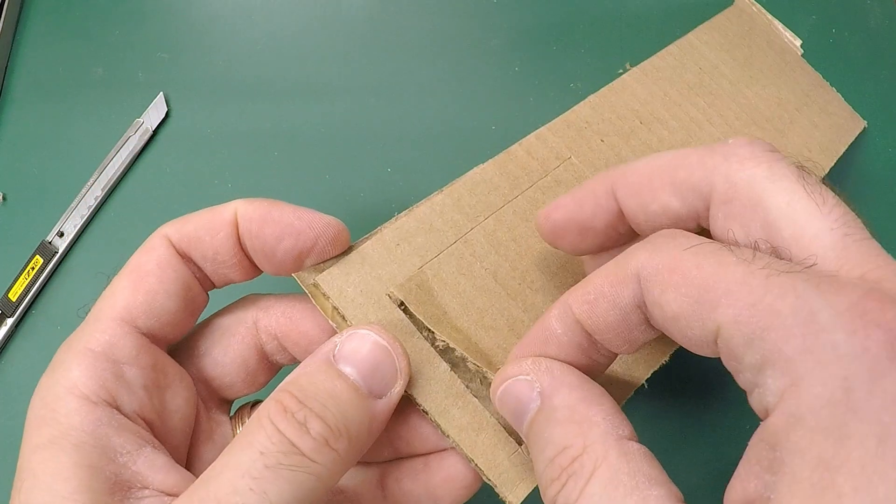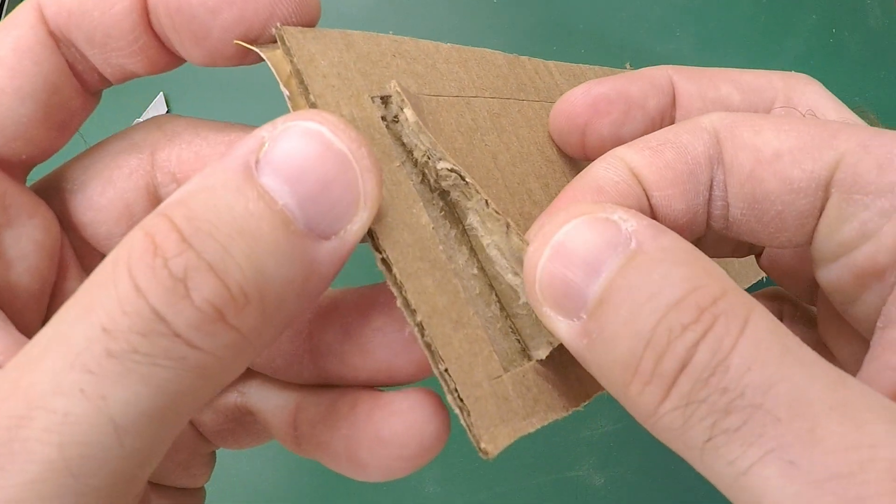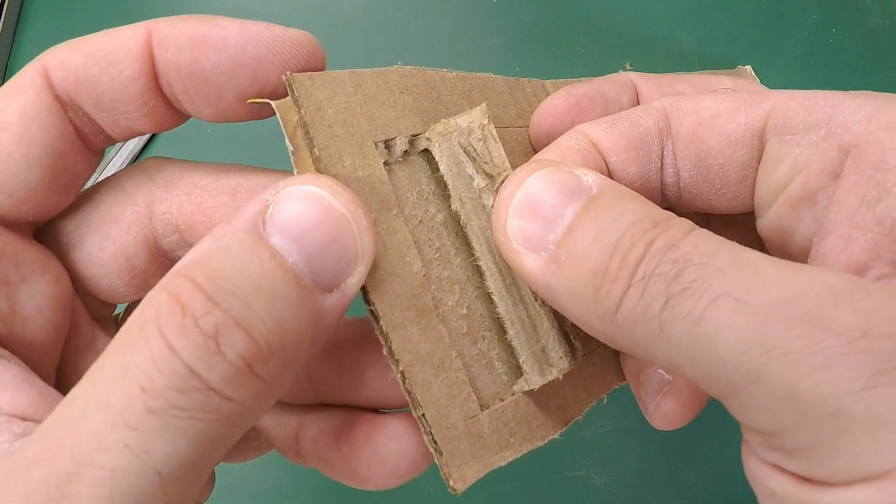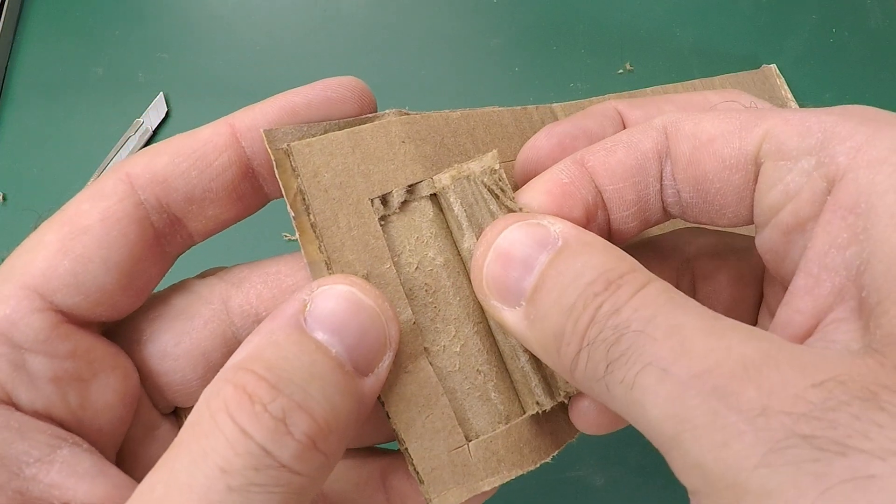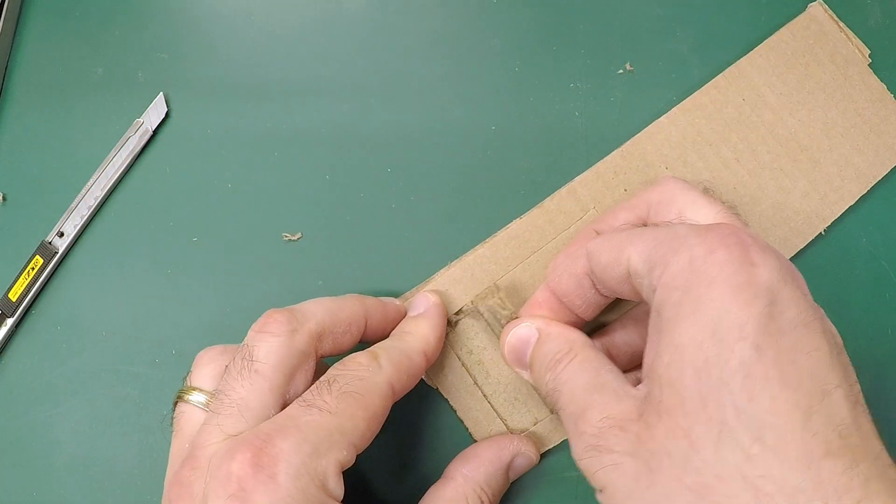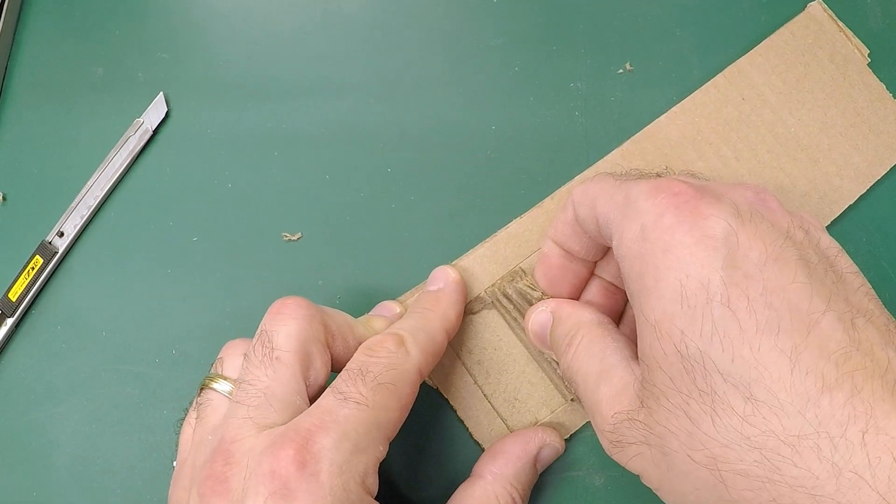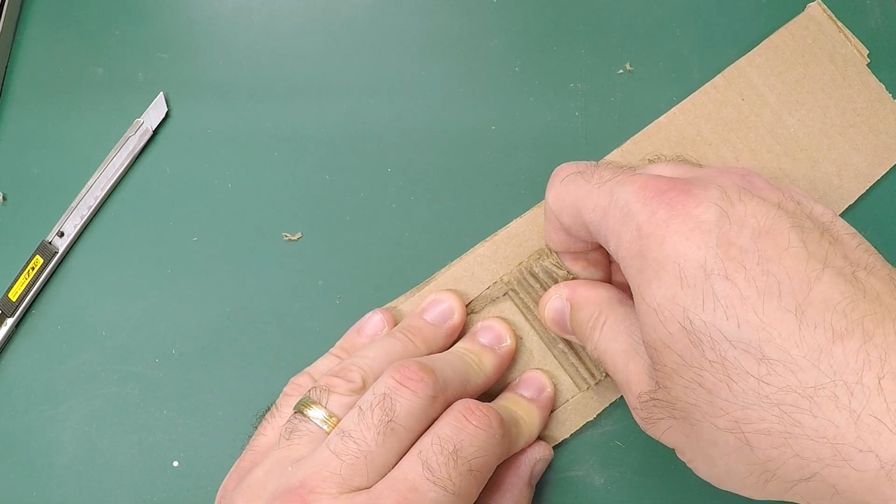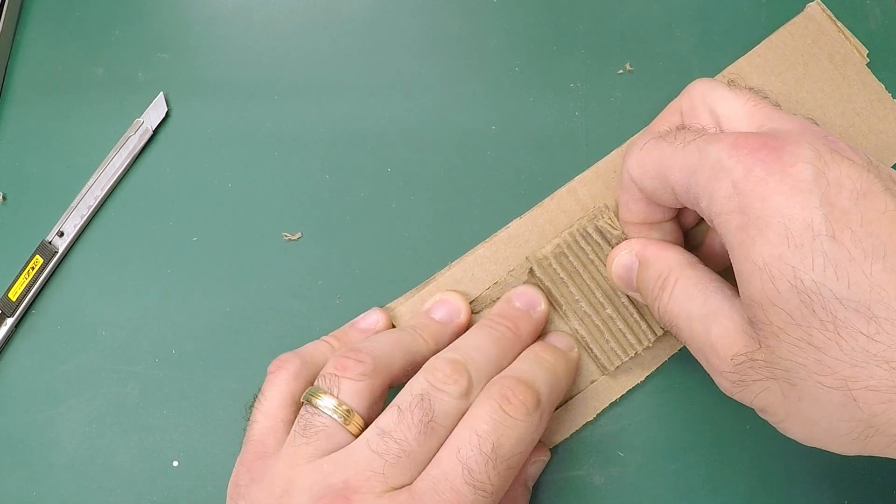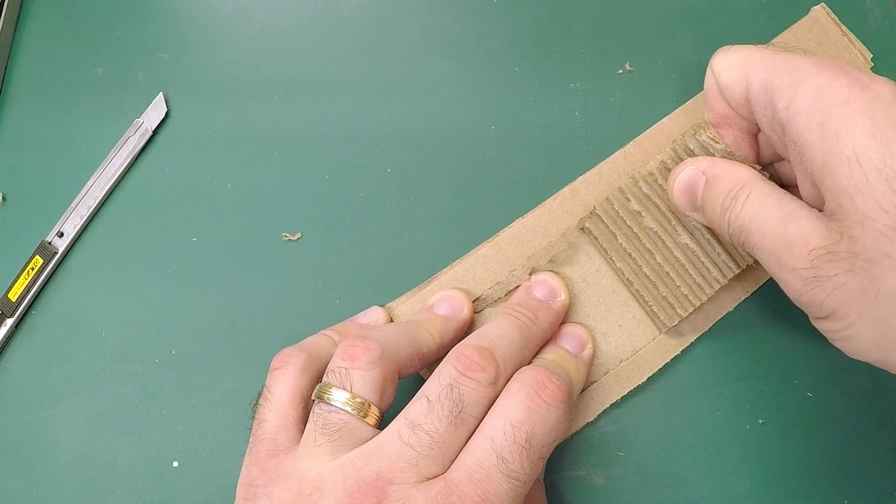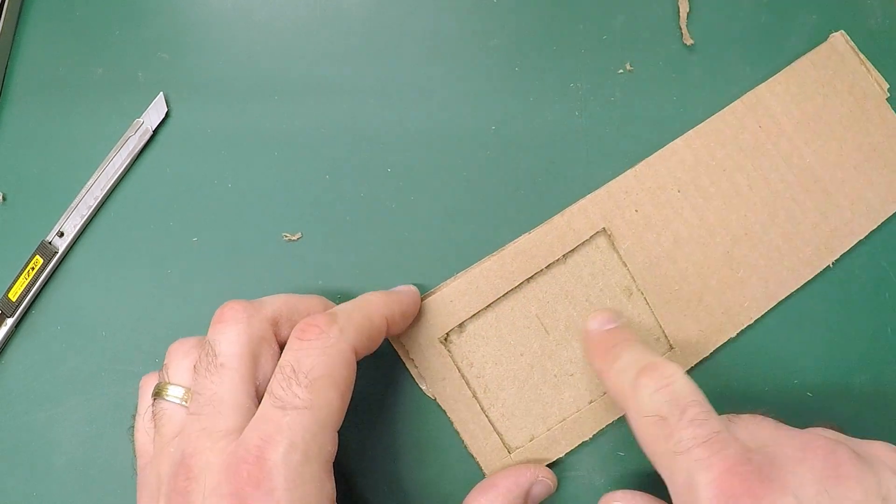And you'll see right here, I've flapped it up so the corrugation in the middle is also cut. And now I'm just going to gently pull it and sort of zipper it back. And you see now I've got a nice little cutout.